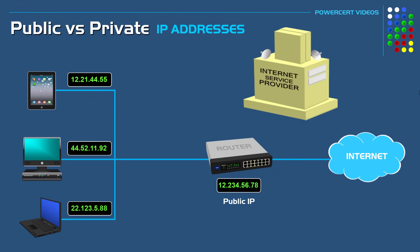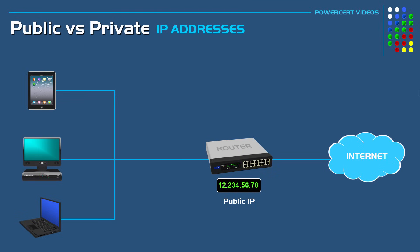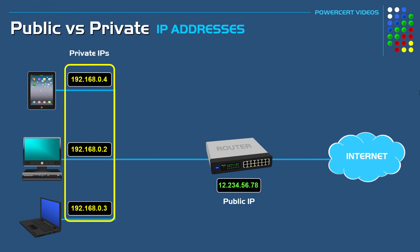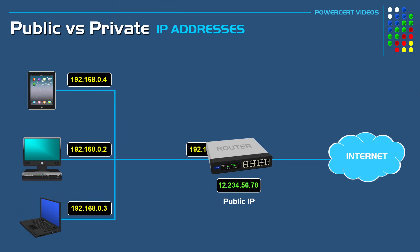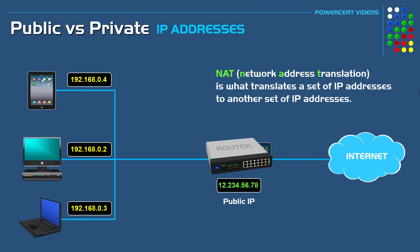And let's face it — if every device in the world had their own public IP address, we would have run out of public IP addresses already. So what we can do instead is have the router assign the devices inside our home or business private IP addresses. And when these devices need to access the internet, their private IP address will be translated to the one public IP address we have been given. The service that does this translation is called NAT, or Network Address Translation, and it's built into our router.